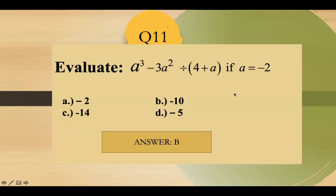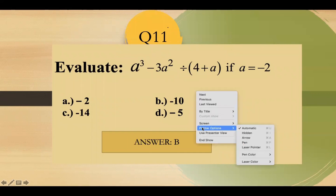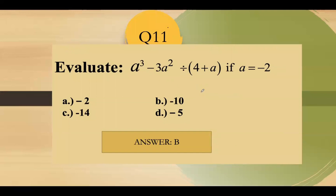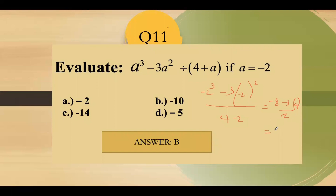Question number 11: evaluate a cubed minus 3a squared divided by 4, plus a, when a equals negative 2. Substituting: negative 2 cubed minus 3 times negative 2 squared over 4, plus negative 2. That gives negative 8 minus 12 over 4 plus negative 2. Negative 8 minus 12 is negative 20 divided by 2 is negative 10. Answer: letter B.